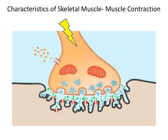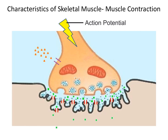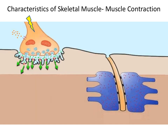Now that we've gone over the parts, let's go over what happens at the neuromuscular junction. First, an action potential travels down to the axon terminal. This action potential stimulates the opening of voltage-gated calcium ion channels, allowing calcium ions to diffuse into the axon terminal. These calcium ions then stimulate synaptic vesicles filled with neurotransmitter to fuse to the presynaptic membrane. The neurotransmitter diffuses across the synaptic cleft and binds to the receptor on a chemical-gated sodium ion channel, causing it to open and allowing sodium ions to diffuse across the sarcolemma.